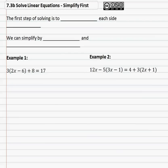As we attempt to do that, the first step of solving is to make sure we simplify each side completely. If there's any simplifying we can do, we want to do it. And we can do simplifying by either distributing or combining like terms.